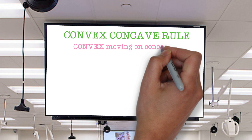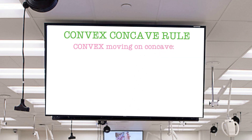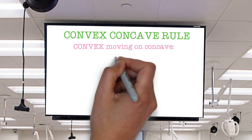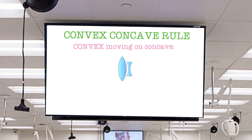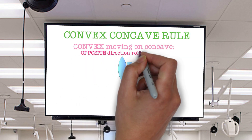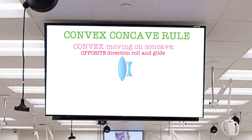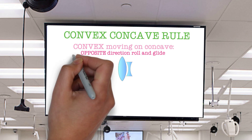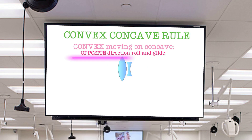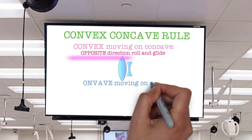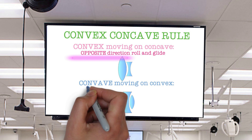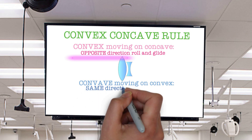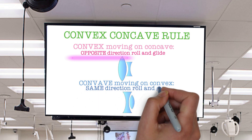When a convex object is moving on a concave object, the roll and the glide will occur in the opposite directions. Concave moving on convex, the roll and the glide will occur in the same direction.